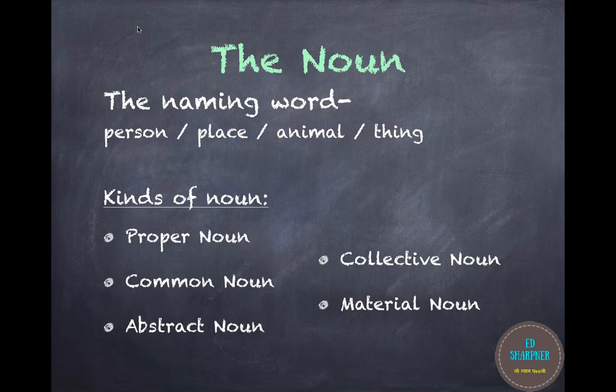The five kinds of nouns are proper noun, common noun, abstract noun, collective noun, and material noun. Now let us look at these in detail.